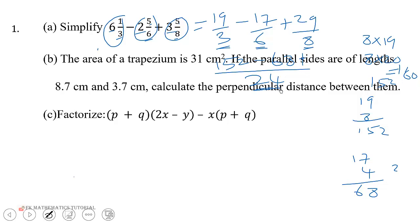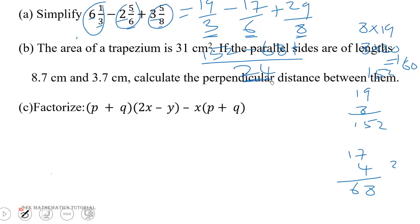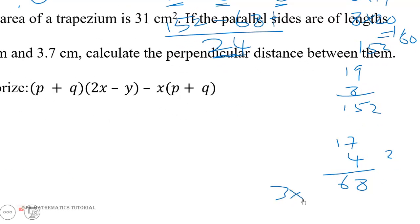So minus 68, then plus. 8 goes into 24 how many times? 3 times. And 3 times 29. You know if it were 3 times 30, it would have been 90. We are left with only 1 from 29 to 30, so we subtract that 3 to get 29 times 3 to be 87.